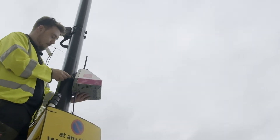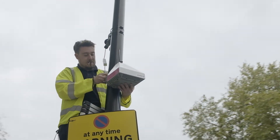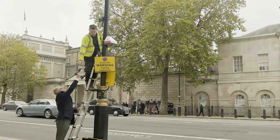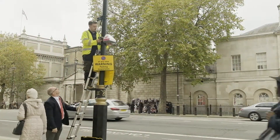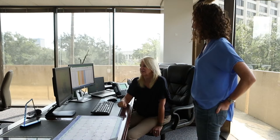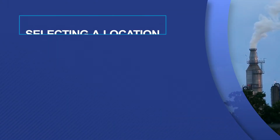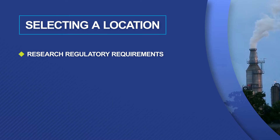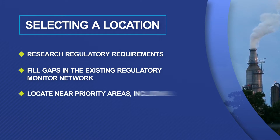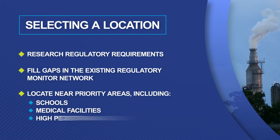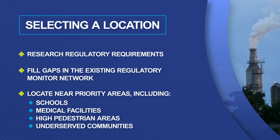If you determine stationary pollution monitors sampling air across a wide area best match your goals, you'll have to decide where and how to deploy these sensors. Aside from your goals, here are some guidelines to help ensure success. First, determine if there are regulatory requirements on the placement of monitors. Select locations that fill gaps in the existing regulatory monitor network and are near priority areas, including schools, medical facilities, high pedestrian areas, or underserved communities.